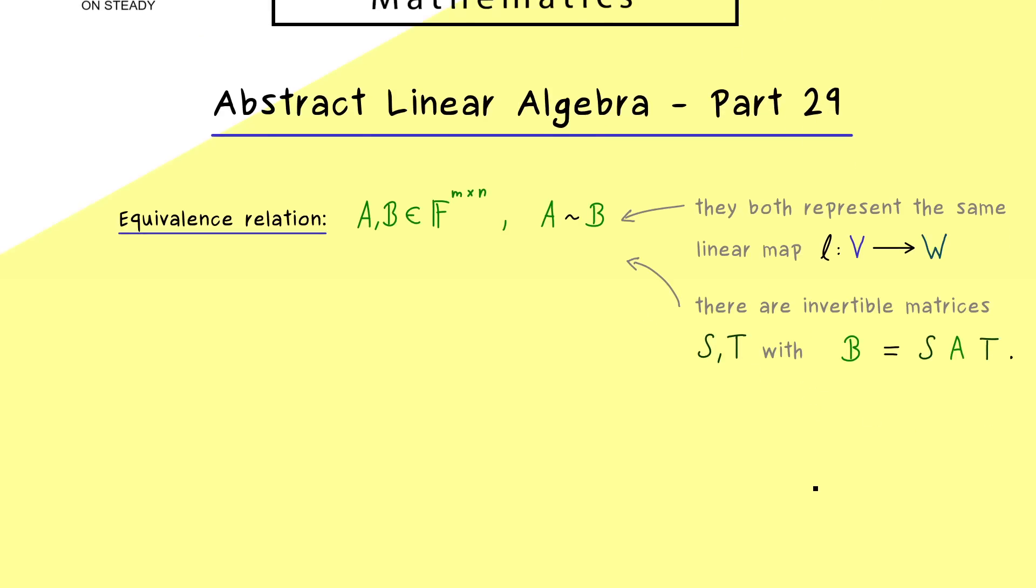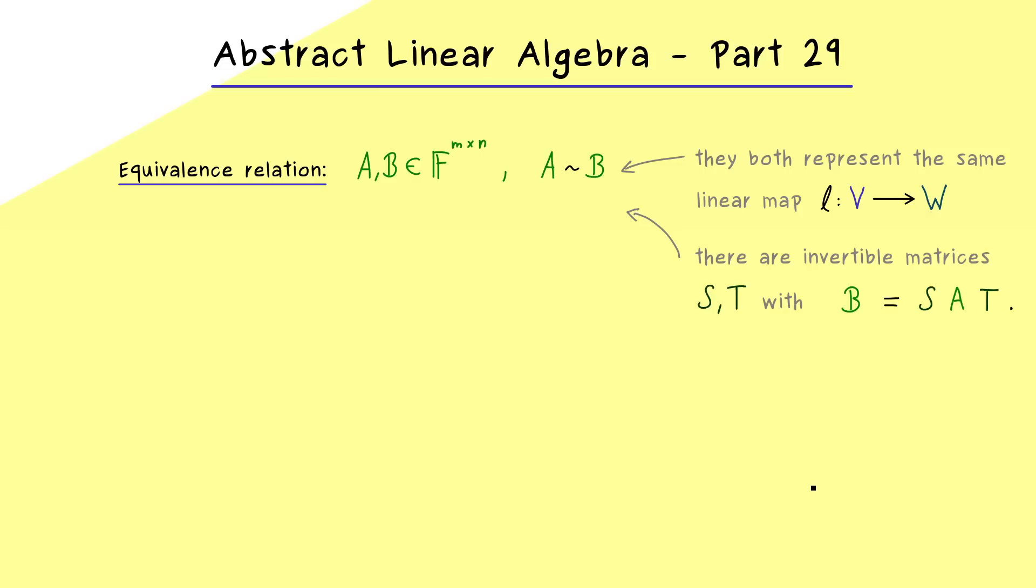And now we have a natural question, namely do we have an invariant under such an equivalence operation? So we could ask, is there something in the matrix which does not change while doing these matrix multiplications? For example, it could happen that the kernel or the range of the matrix does not change when we form this matrix product.